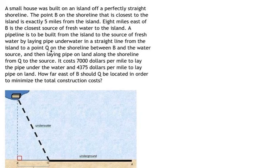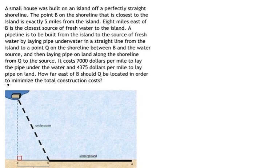The pipeline goes from the island to a point Q on the shoreline between B and the water source, then along the shoreline from Q to the water source. It costs seven thousand dollars per mile to lay the pipes under water and four thousand three hundred seventy-five dollars per mile to lay pipes on land. How far east of B should Q be located in order to minimize the total construction costs?